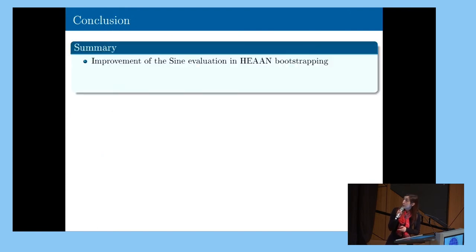I will conclude by summarizing what we saw in this presentation. So as I said, we improved the HEAN bootstrapping. In particular, we improved the two parts of the HEAN bootstrapping, the sign evaluation, and also the linear transform, so coefficient to slot and slot to coef. And I showed you some implementation results, which prove that our improvements are concrete.